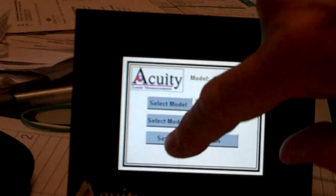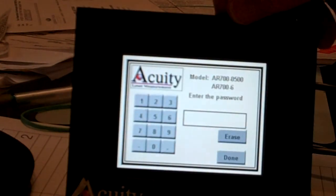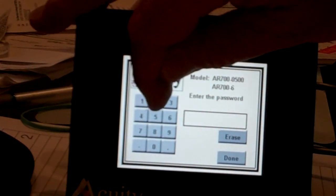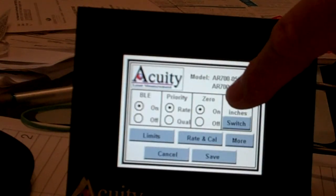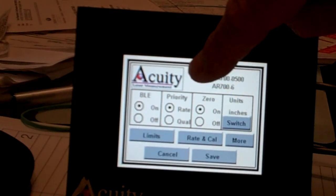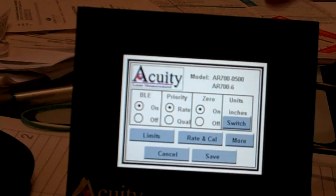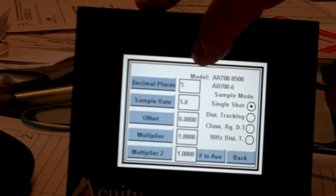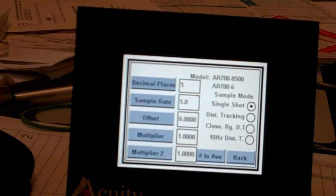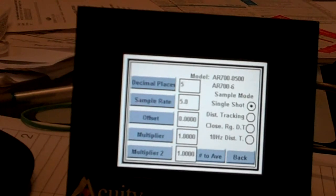I then went into settings and the password is 2468 and I put on the zero and keep the priority rate and the units in this case are inches. And then I also went into rate and cal and I changed that decimal place from four places which is the default to five places to get more accuracy. And I left the sample rate offset multiplier multipliers alone.